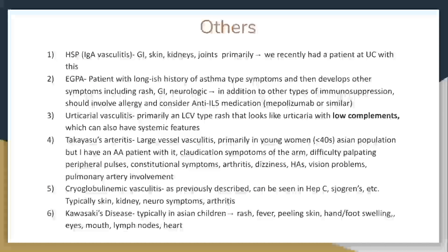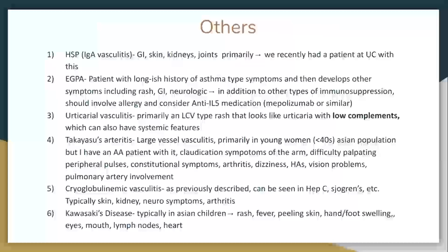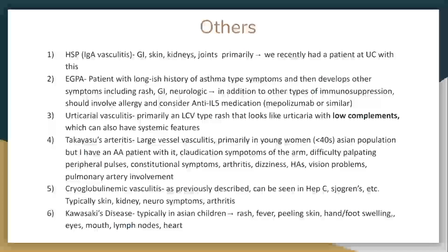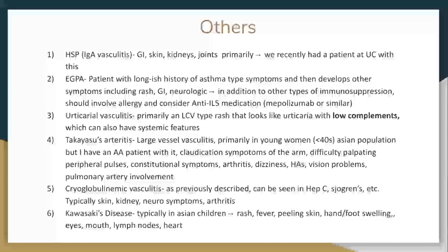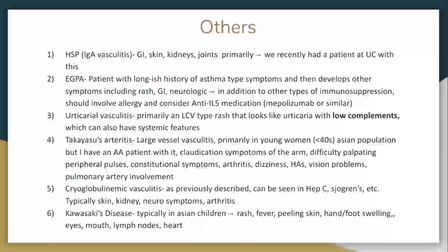IgA vasculitis — we had one at UC recently. The patient had classic small vessel involvement but then also some features more consistent with medium vessel. She had nodules, kidney involvement, lots of purpura, GI involvement — we're pretty sure it was that. She got treated with steroids.